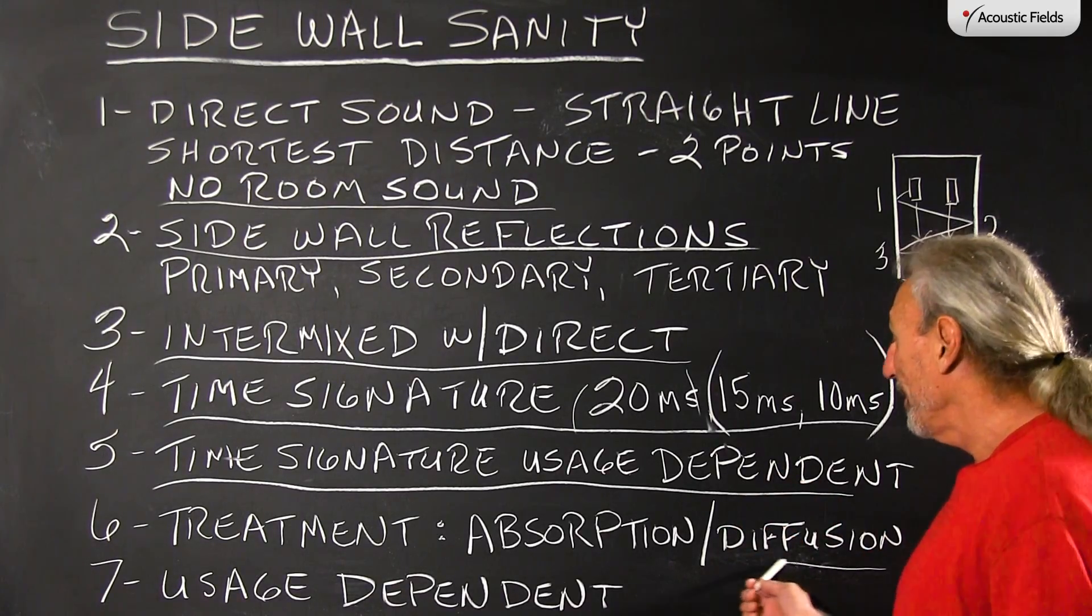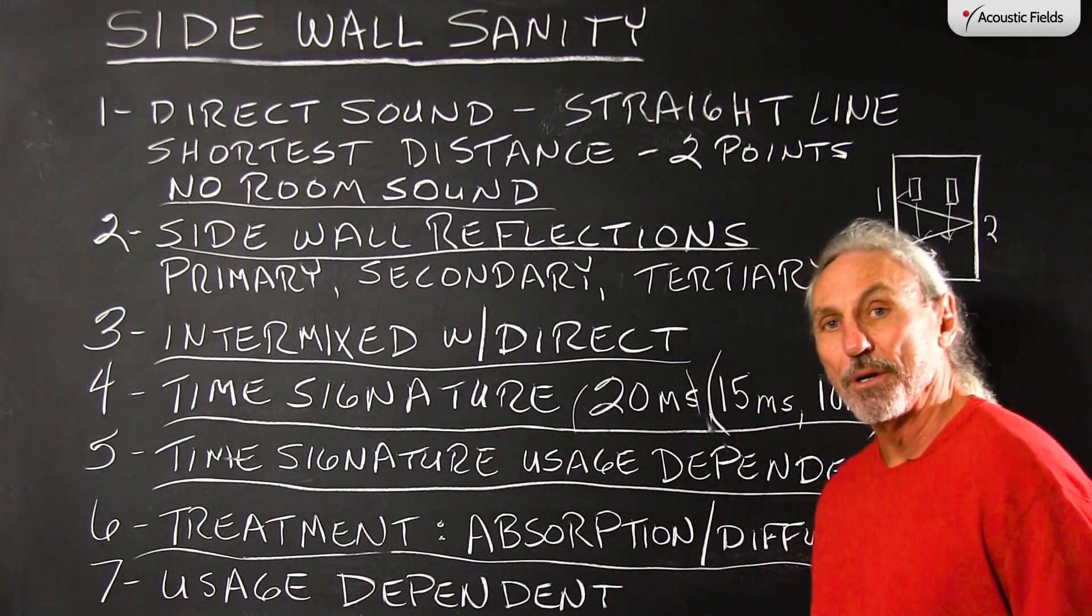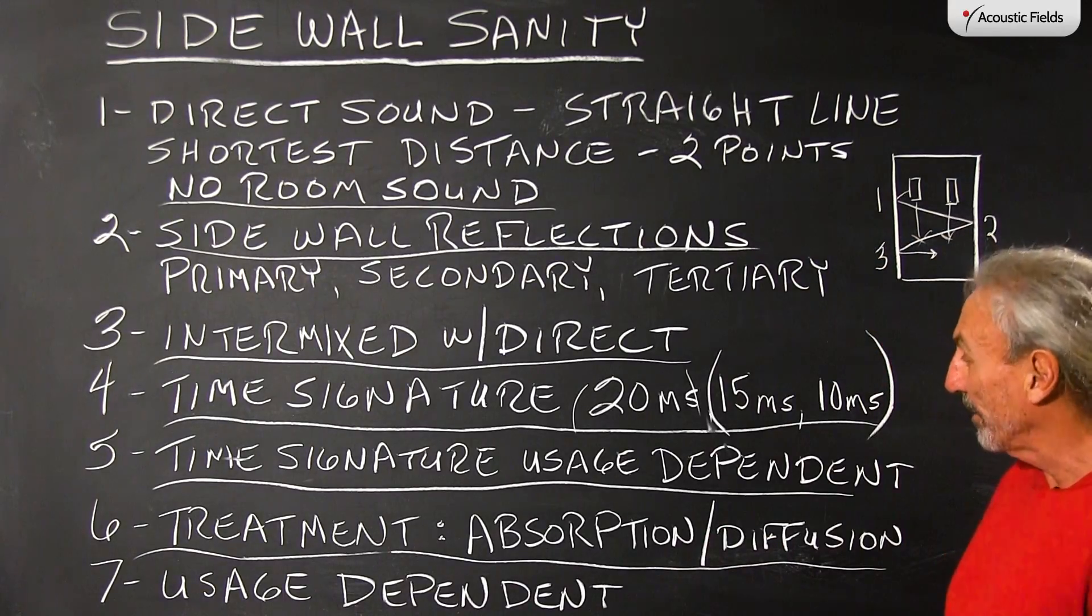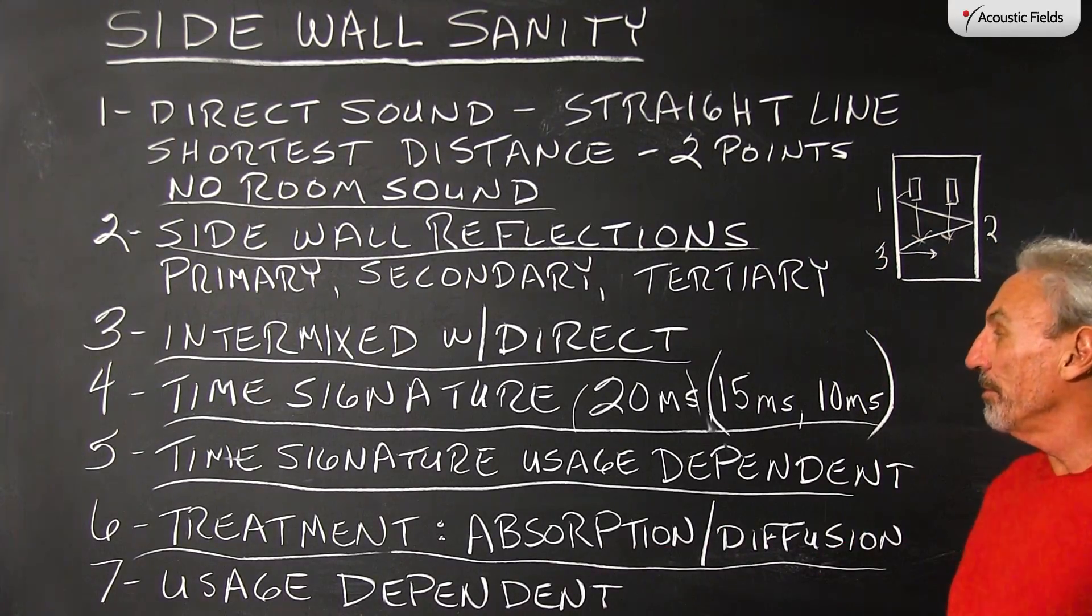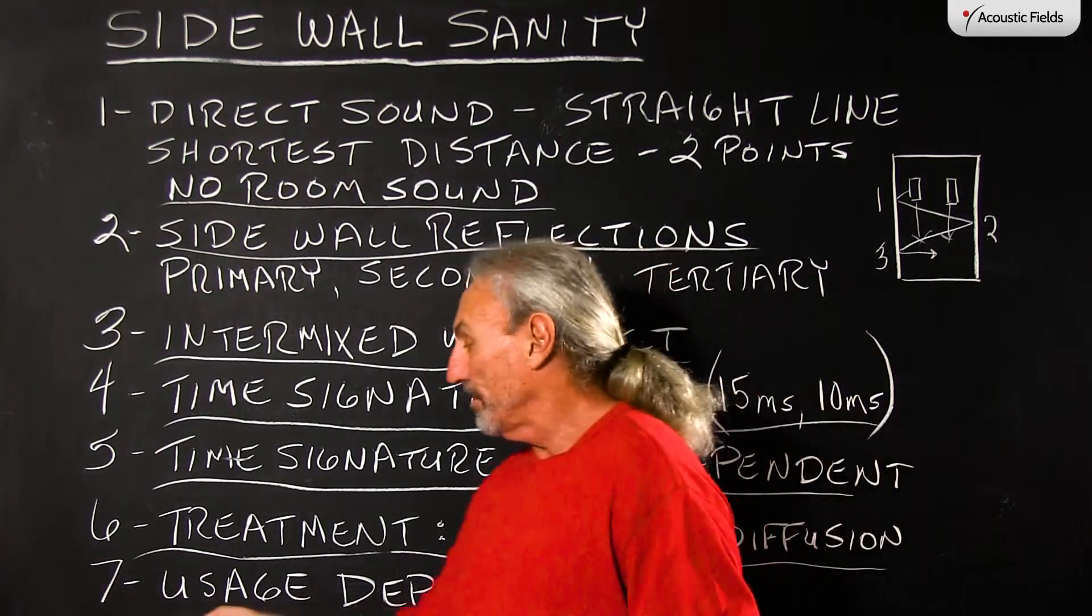Alright. What are our treatment options? Well, we only have two. I wish we could think of a third, but there's none. I mean, we could say reflections, but we're trying to minimize those. So, absorption and diffusion are only two technologies and both of those technologies are usage dependent.